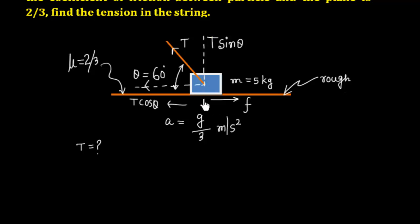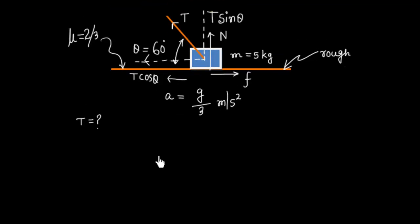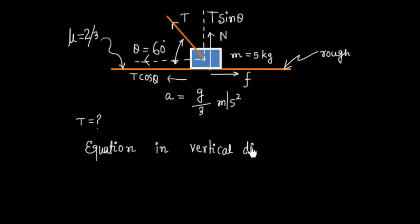The surface pushes the object up with a normal reaction N. There is also a body force mg acting downward. We can now write equations in both vertical and horizontal directions using Newton's Second Law.